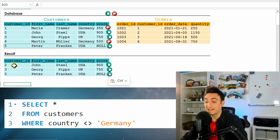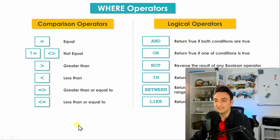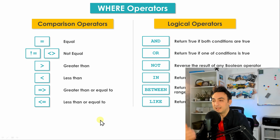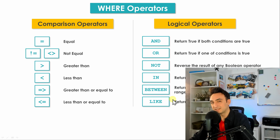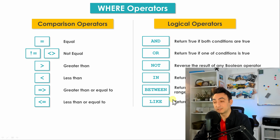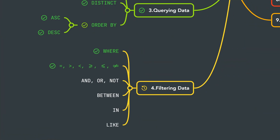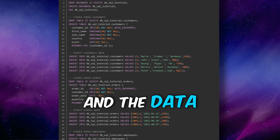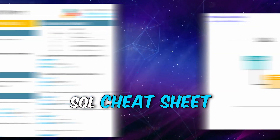We've now covered all the comparison operators. They're pretty easy — they always compare two values. Practice with them until you understand how they work. Next, we'll move on to logical operators: AND, OR, and NOT. They're a little more difficult but very important in SQL. In the video description you'll find a link to free SQL materials including the database, a SQL cheat sheet, and all the presentations. Thanks for watching!